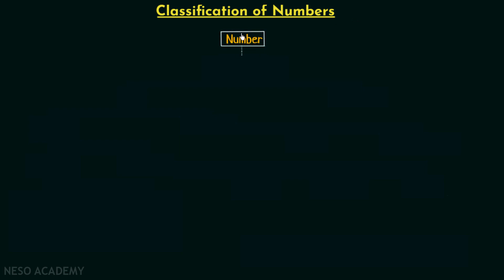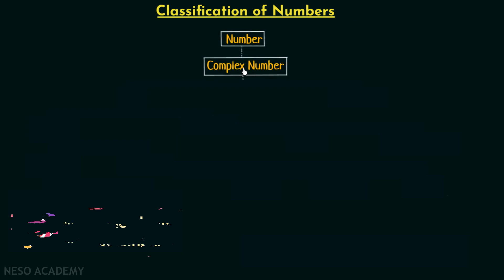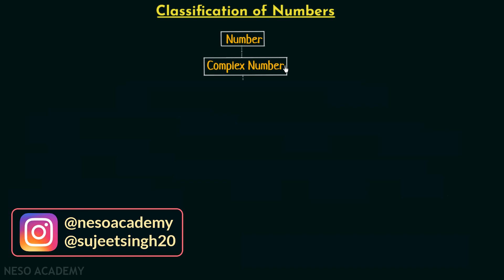Whenever we have a number we can express it in a complex number form. We all know that the complex number form is a + ib, where a and b are real numbers, i is the imaginary unit, and i is equal to the square root of minus one.